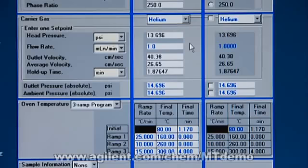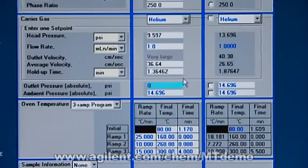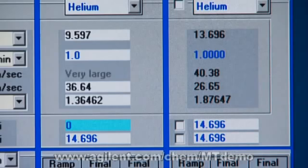Now, I can simulate what it would look like if I use this particular analysis with a mass spec. So we put zero in the outlet pressure, and now I've got what it looks like at a mass spec. The head pressure goes to 9.5 psi. Quite a bit of difference.